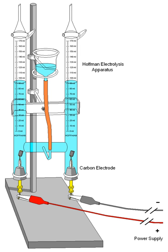Faraday discovered that when the same amount of current is passed through different electrolytes connected in series, the mass of substance liberated or deposited at the electrodes is directly proportional to their equivalent weight.